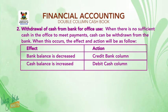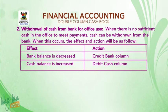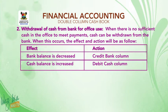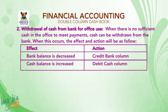Number two: withdrawal of cash from bank for office use. When there is insufficient cash in the office, cash can be withdrawn from the bank. Effect 1: bank balance is decreased — action: credit bank column. Effect 2: cash balance is increased — action: debit cash column.